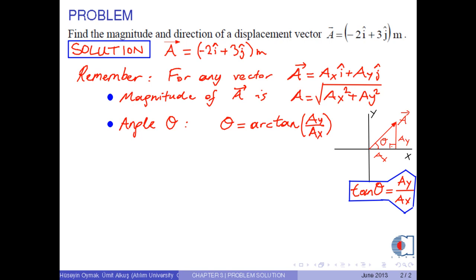If we return to our example, ax is equal to minus 2 meters and ay is equal to 3 meters.